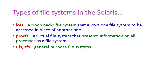Next is LOFS, the loopback file system, which allows one file system to be accessed in the place of another. Then procfs is a virtual file system that presents information on all processes as a file system. Finally, UFS and GFS are general purpose file systems. These are all the types of file systems in the Solaris operating system.